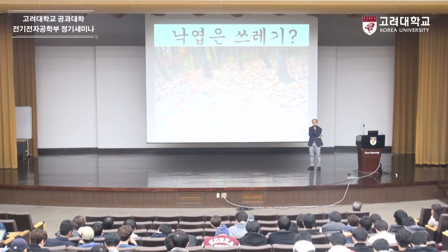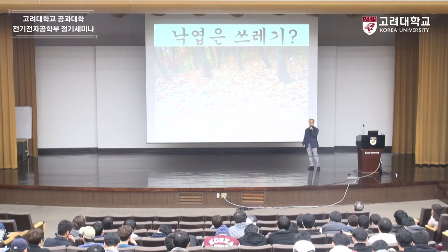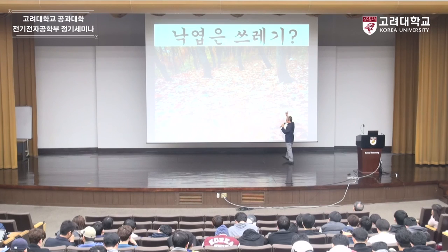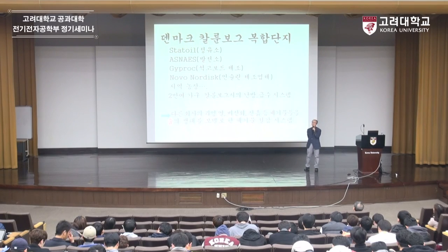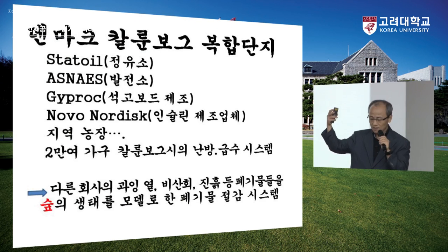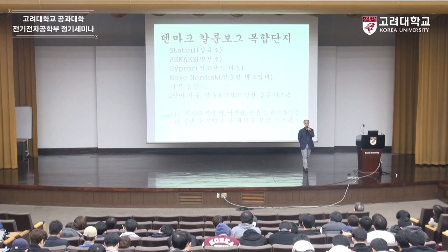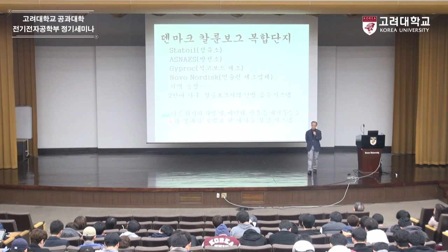이제 말을 마치겠습니다. 단풍입니다. 지금 많이 단풍 구경 다니시죠? 단풍이 떨어지면 이건 쓰레기일까요? 아니요. 지렁이가 먹고 땅을 기름지게 합니다. 비가 오면 흙을 보호해줍니다. 흙이 쓸려내려가지 않는 보온 덮개입니다. 낙엽은 쓰레기가 아니라 다양한 효능을 가지고 있는 아주 유용한 물질입니다. 자연은 쓰레기가 없습니다. 그리고 모든 것이 순환합니다.